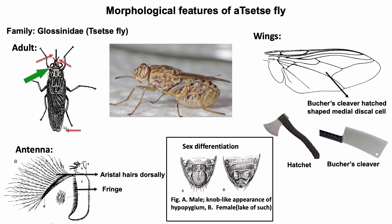Eyes are dichoptic in both male and female flies. Wings of these flies are scissor-like at resting condition; they extend a short distance beyond the end of the abdomen. The wing can be differentiated from the wings of other flies based on the medial discal cell, which is butcher's cleaver shape or hatchet shape. Sex differentiation can be done based on the presence or absence of a knob-like appearance of the hypopygium — in male flies a button or knob-like hypopygium is present on the ventral surface of the posterior abdomen; in female it is absent.